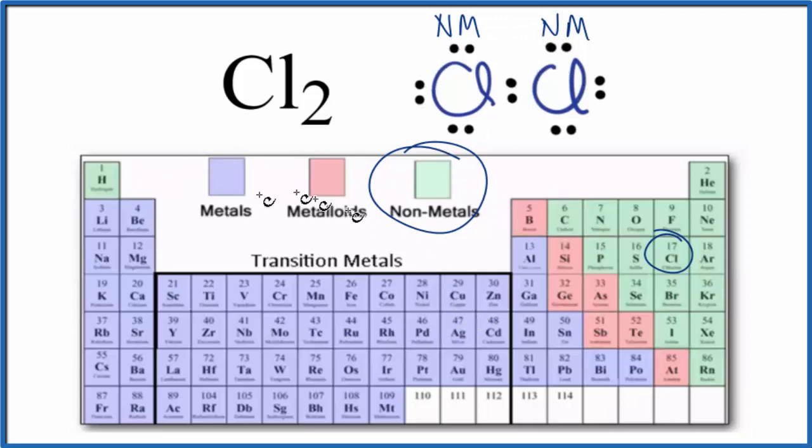So, according to the periodic table, metals and nonmetals, chlorine, Cl2, should be a covalent or molecular compound. Let's look at electronegativity. That's something we can use also to determine whether it's ionic or covalent.